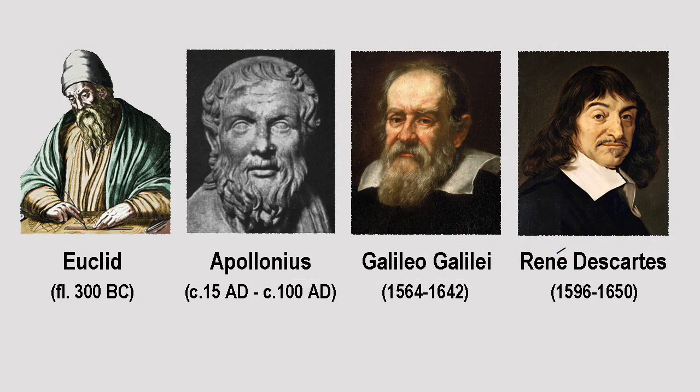Euclid dealt with the parabola in a work called Conic Sections, and although this treatise was lost, it provided a foundation for the first four books of the same name by Apollonius.